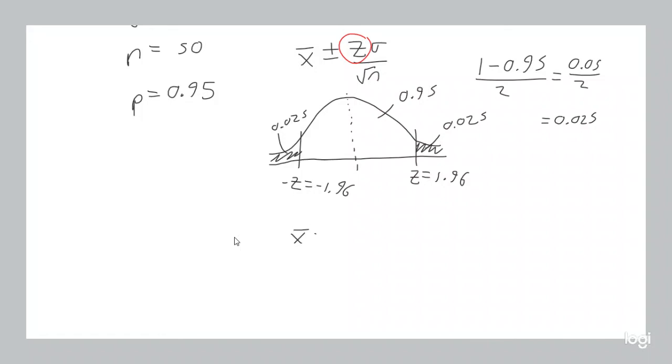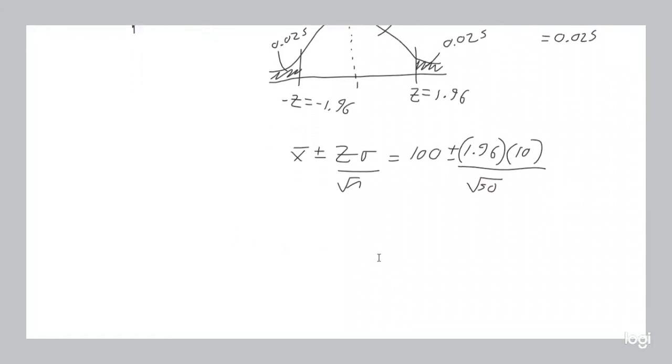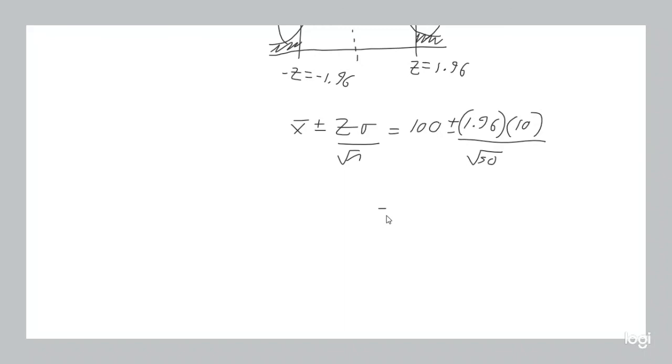x bar plus or minus z sigma over root n equals 100 plus or minus 1.96 times 10 divided by the root of 50. And then you can make that calculation.